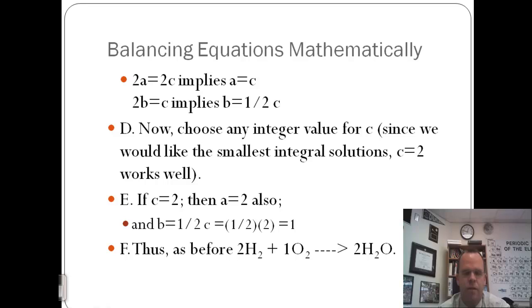In this case, we have B equals half C, so to make a whole number for the coefficient of C, let's make C equal to 2. If we make C equal to 2, that makes B equal to 1, and it also makes A equal to 2. So we get 2H2 plus 1O2 forms 2H2O.